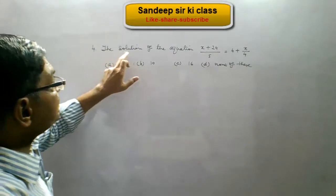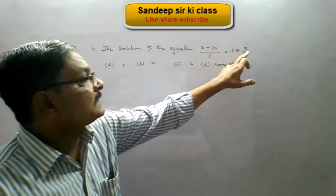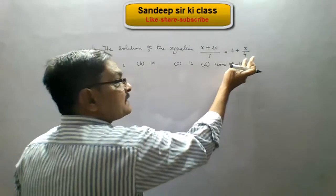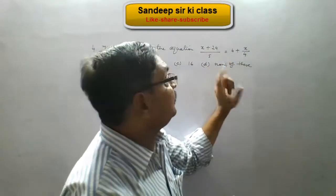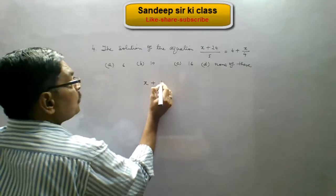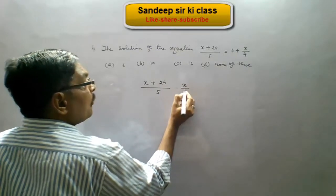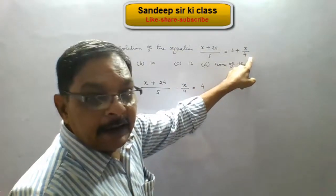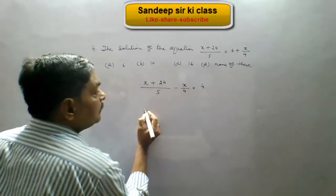Question number 4: the solution of the equation (x plus 24) upon 5 equals 4 plus x upon 4. These are the options given. Now we transpose — first we transfer the term containing x to the left hand side. So we get x plus 24 upon 5 minus x upon 4 equals 4.